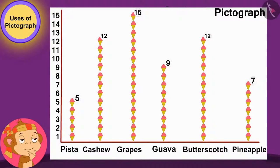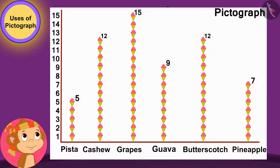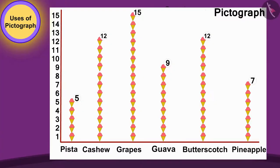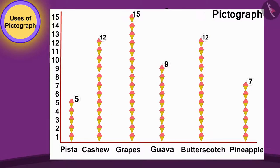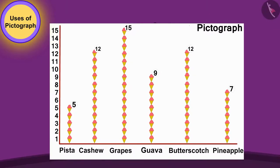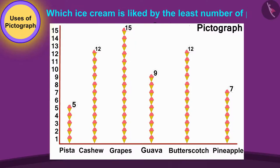Now, finally, Babban thought, by looking at the pictograph, the number of people who like this ice cream is the least. Children, can you tell which ice cream is liked by the least number of people?